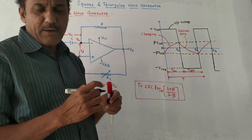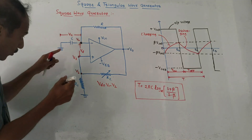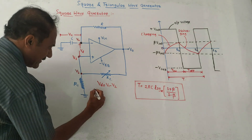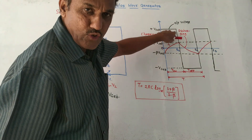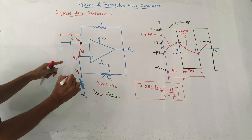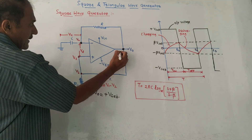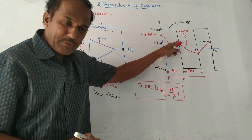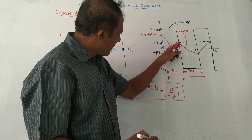This op-amp is a high-gain operational amplifier, so it either produces plus V-saturation or minus V-saturation depending on the input applied. Since V2 is 0 and V1 has some positive value, Vd will be positive, and the output V0 will be plus V-saturation. Initially, this is marked as plus V-saturation. Due to this plus V-saturation, the same voltage is applied through this branch, giving plus V-saturation at the output. Due to this plus V-saturation, the capacitor will start charging following this path.